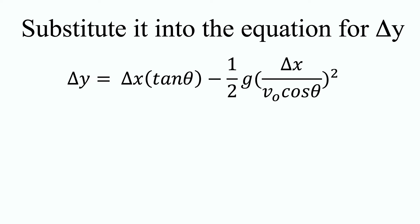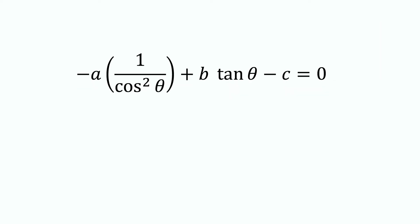Note that every term is a constant except for theta. We will use symbols now for the constants and rearrange the equation, giving us negative a times one over cosine squared theta plus b times tangent theta minus c equals zero.